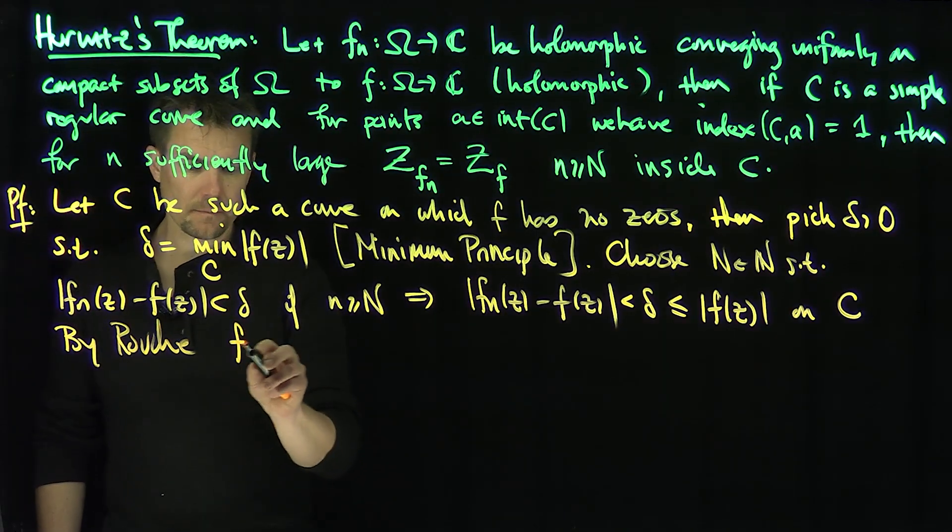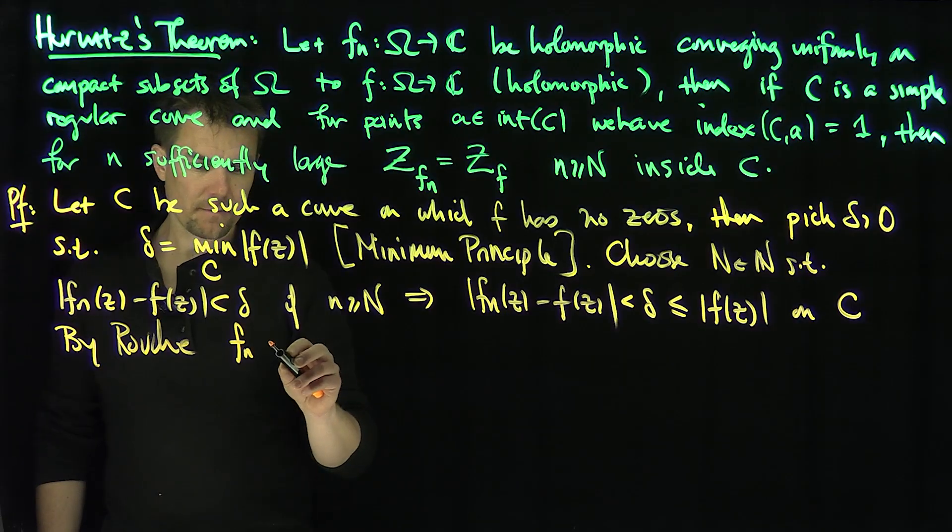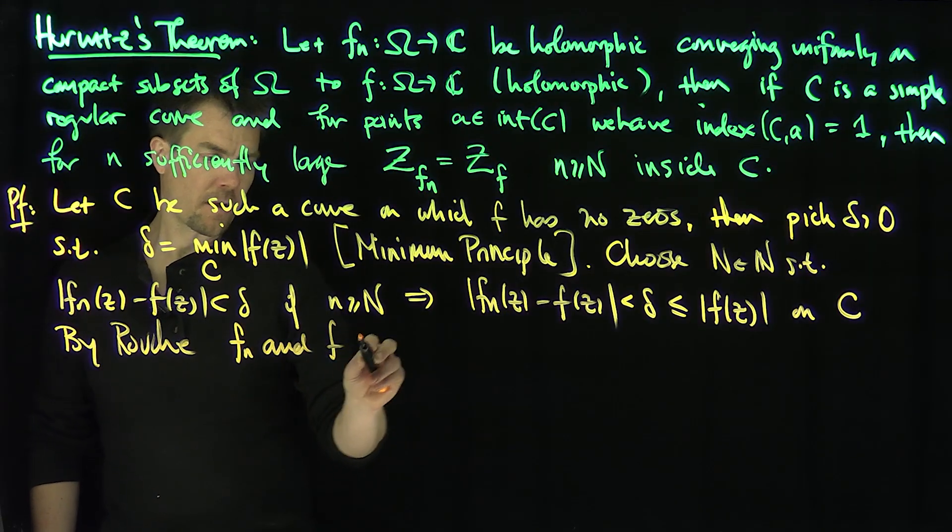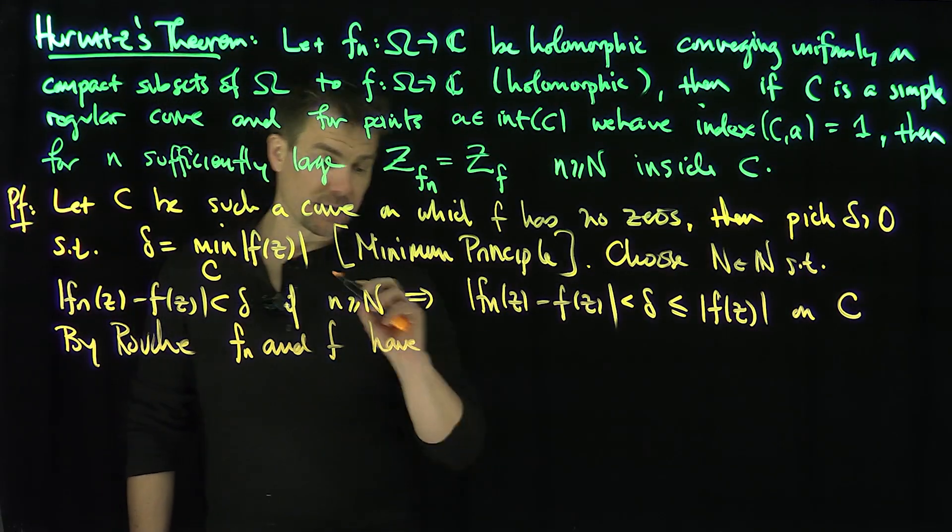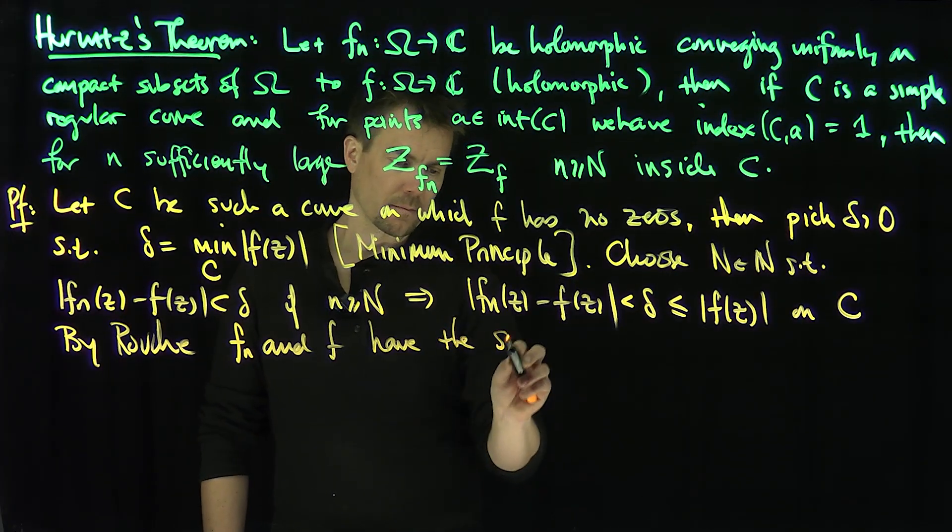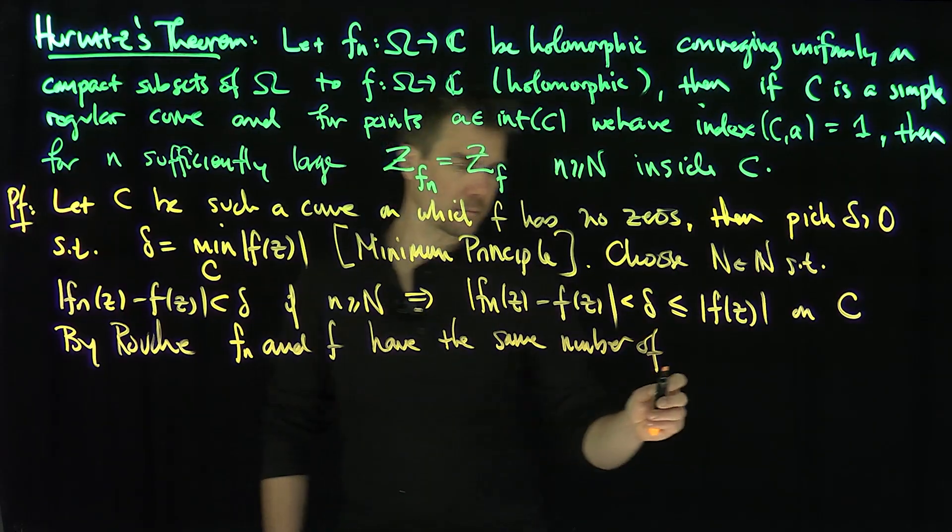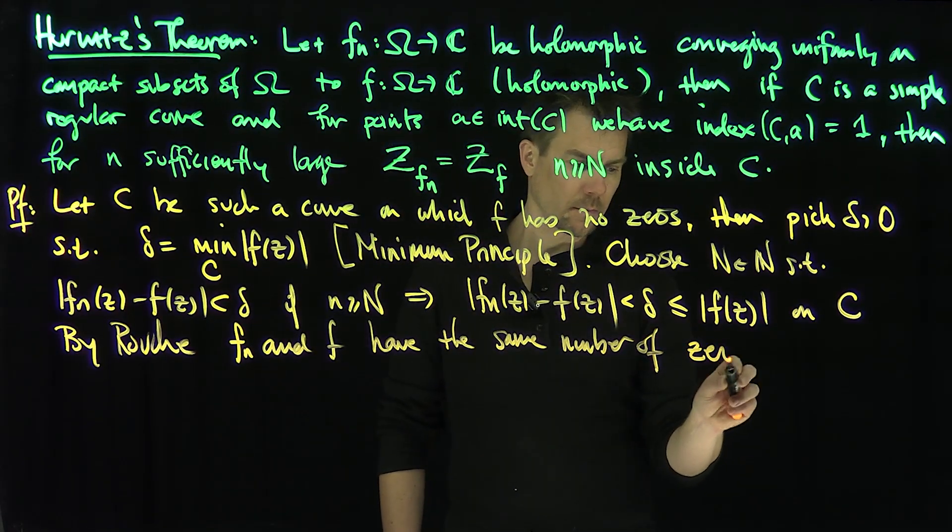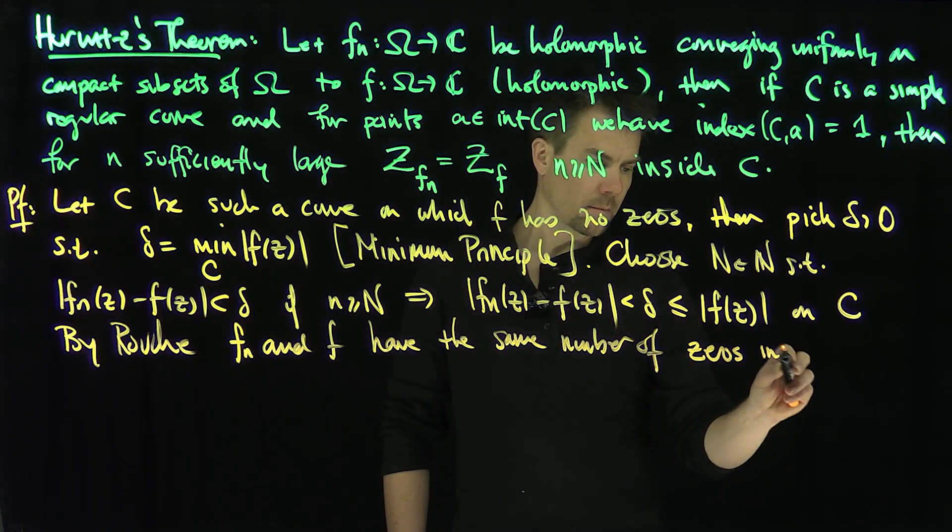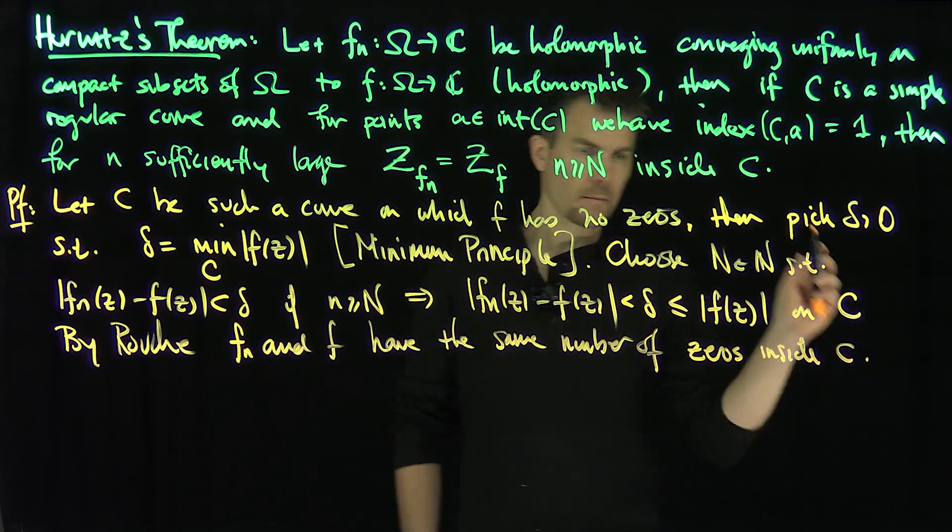fn and f have the same number of zeros inside C. Okay, good.